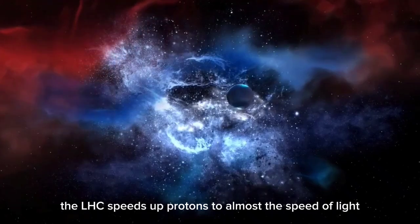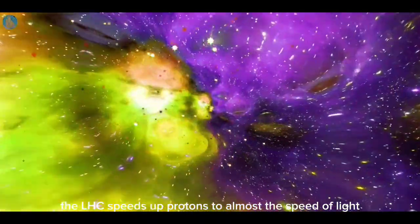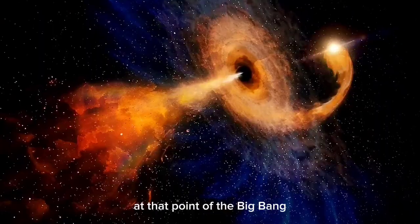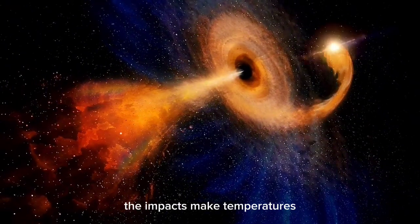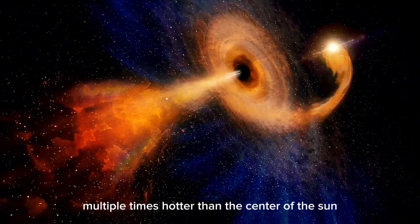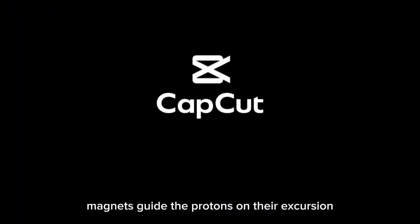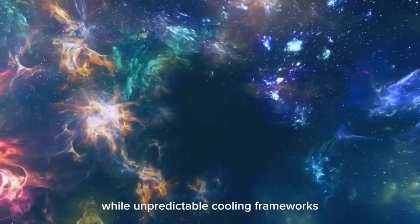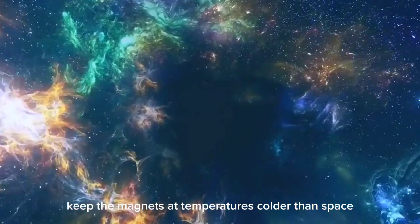The LHC speeds up protons to almost the speed of light, sending them on a crash course that imitates the energy of the universe at that point of the Big Bang. The impacts make temperatures multiple times hotter than the center of the sun. Huge numbers of magnets guide the protons on their excursion, while unpredictable cooling frameworks keep the magnets at temperatures colder than space.